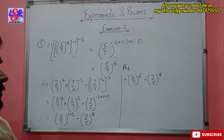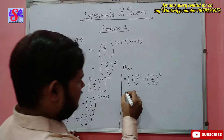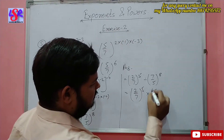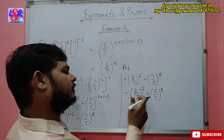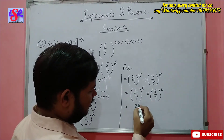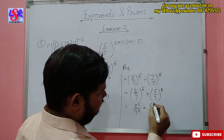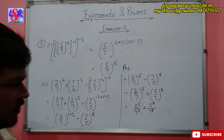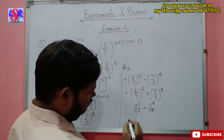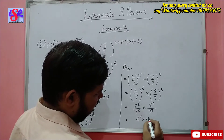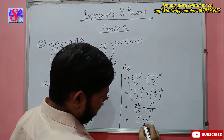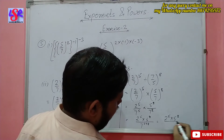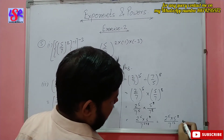We change the division sign to multiplication by taking the reciprocal, giving 2 upon 7 to the power 5 into 5 upon 7 to the power 8. Distributing the powers in numerator and denominator: 2 to the power 5 upon 7 to the power 5, into 5 to the power 8 upon 7 to the power 8. Combining: 2 to the power 5 into 5 to the power 8, whole upon 7 to the power 5 plus 8, which gives 2 to the power 5 into 5 to the power 8, whole upon 7 to the power 13 as the answer.